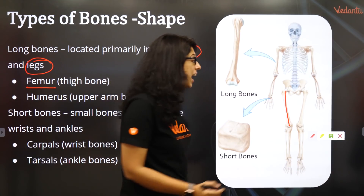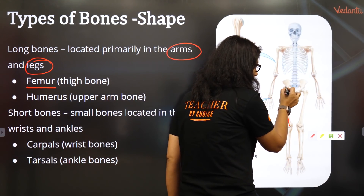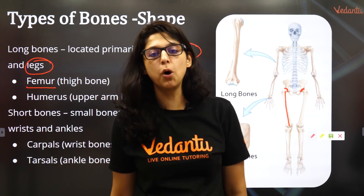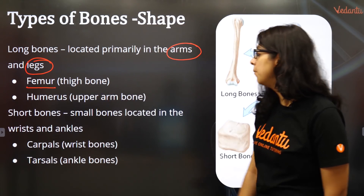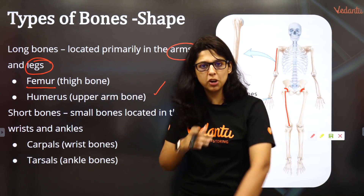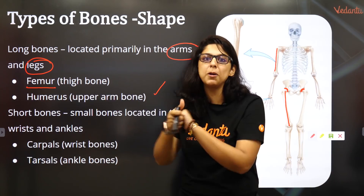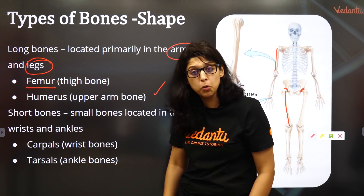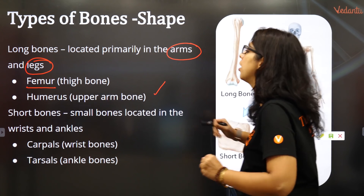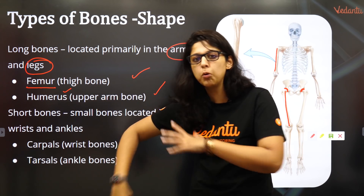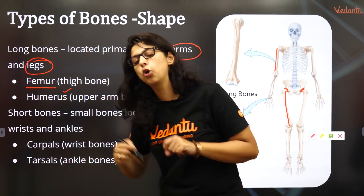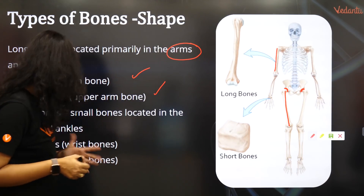The head of the femur goes into the acetabulum — the hip bone. This is a classical example of a ball and socket joint. Then we have the humerus, which is the bone of the upper arm. Humerus, radius, carpal, metacarpal, phalanges. Femur, tibia — these are the long bones. Basic long bones are the femur and the humerus: the thigh bone and the upper arm bone. And there is red bone marrow in long bones.